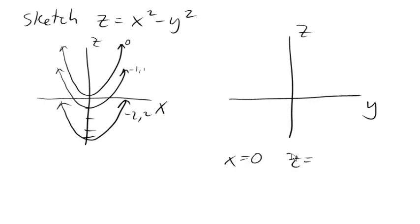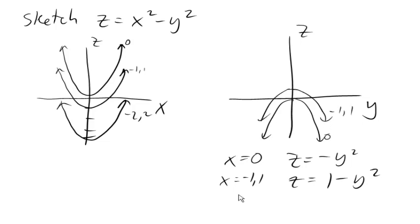So we're gonna get a downwards opening parabola when x is 0. If x is negative 1 or 1, z will be 1 minus y squared. So shift it up 1, coming down. And if x was negative 2 or 2, we got z equals 4 minus y squared. So coming up 1, 2, 3, 4, and down.